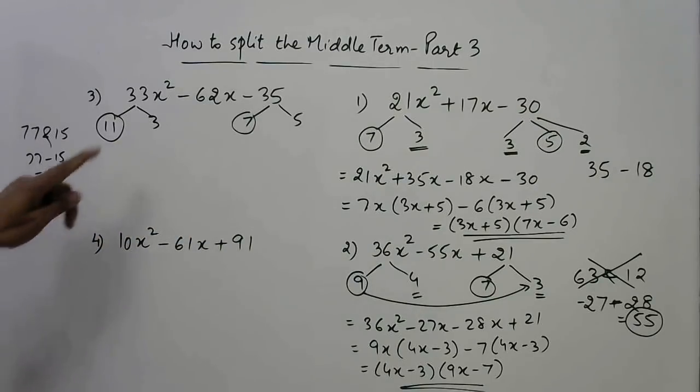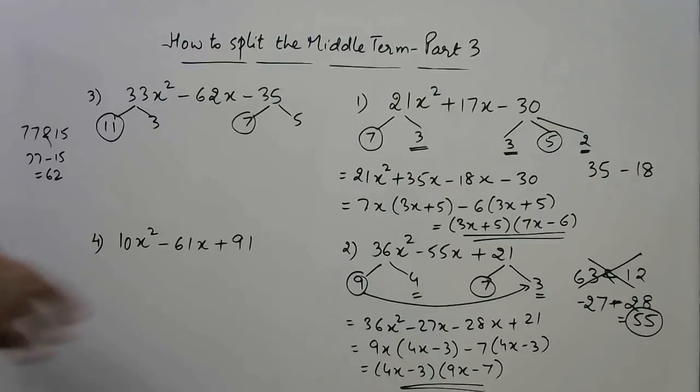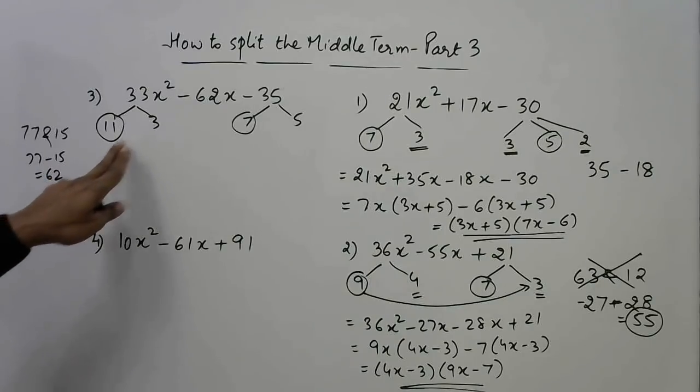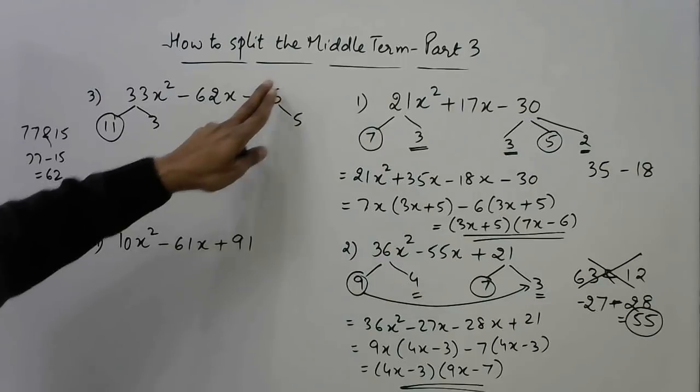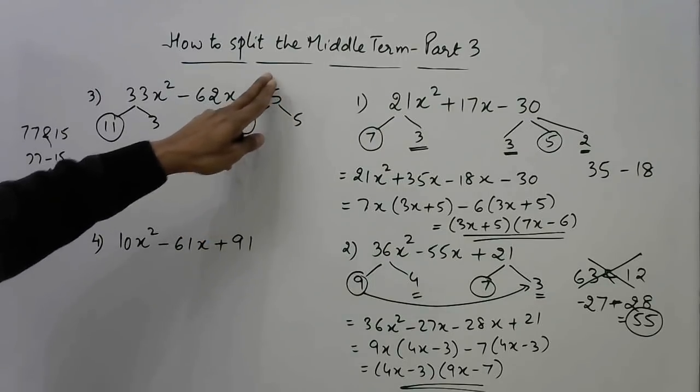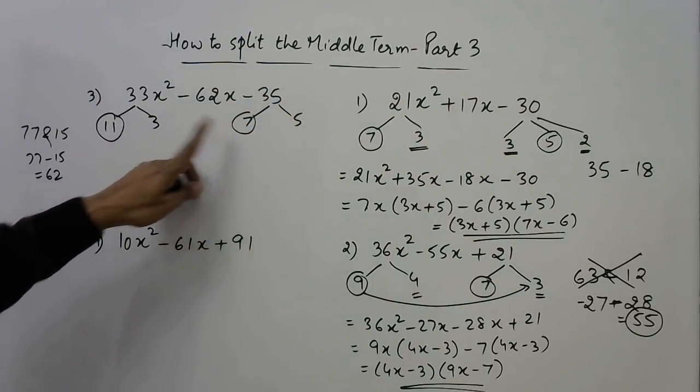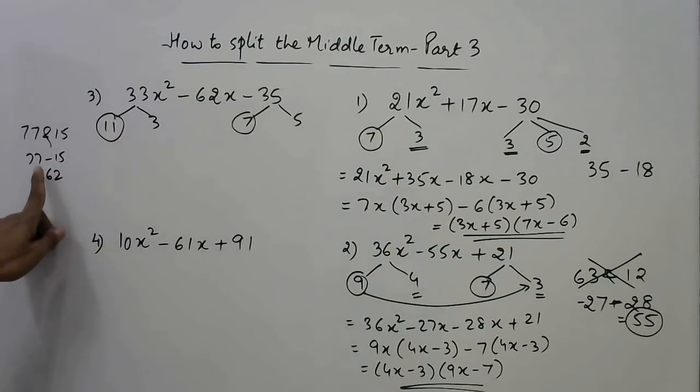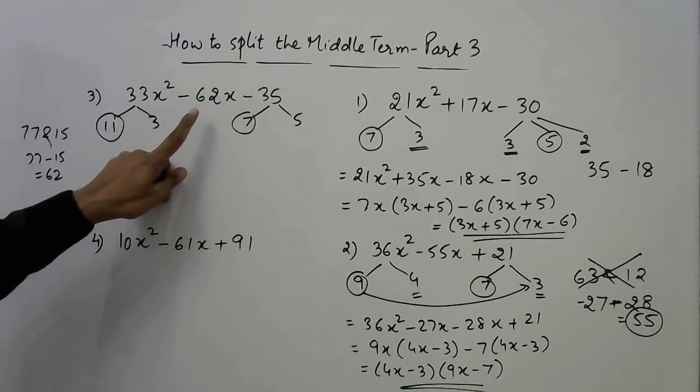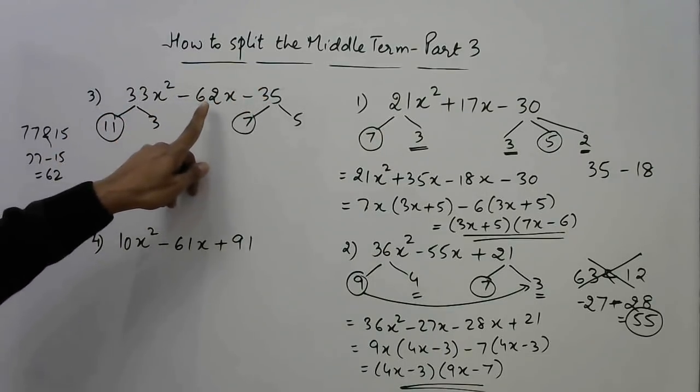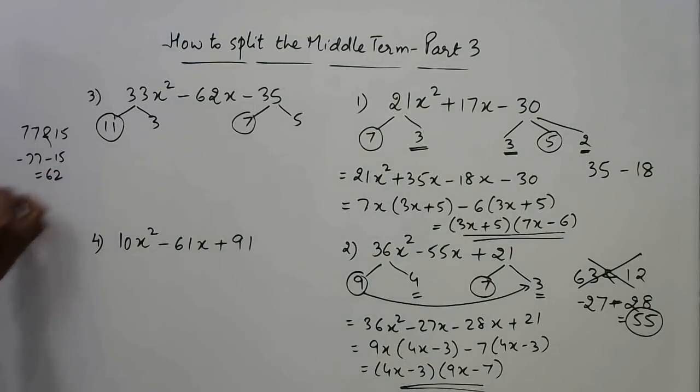So again utilizing that method of multiplying the highest numbers, I have got the solution. Whereas if you multiply 33 and 35 then factorize it, it is going to take at least one or two minutes to get factorized. So friends, do it like this: 11 and 3 are the factors of 33, 7 and 5 are the factors of 35. Take the highest here, take the highest here, 11 times 7 gives you 77 and 3 times 5 gives you 15 and the difference is 62. That is what I wanted.